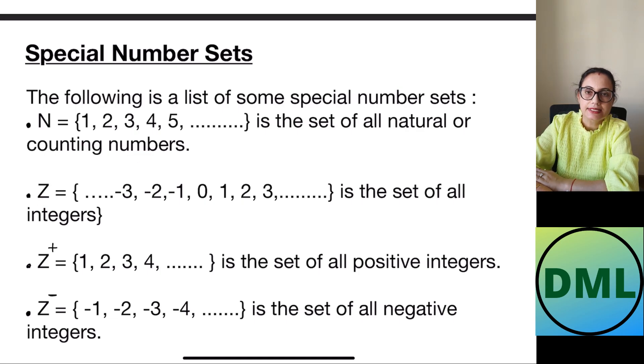Second Z. Z will show you the integers. Integers are positive also and negative also on the both directions. This will be dot dot dot that means this will keep on going minus 3, minus 2, minus 1, 0, 1, 2, 3 and keep on going. This is the set of all integers.